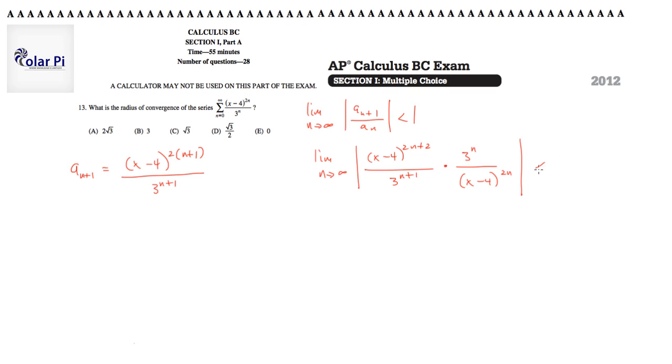Okay, great, and we need this to be less than 1. Got it. Now, some canceling here will go a long way. So these two fellas cancel to an x minus 4 squared in the numerator. And these two guys cancel to a 3 in the denominator.